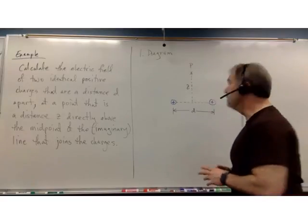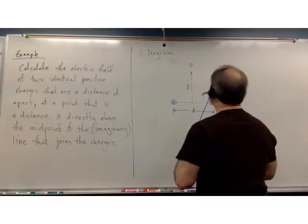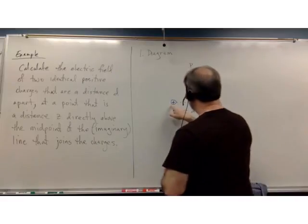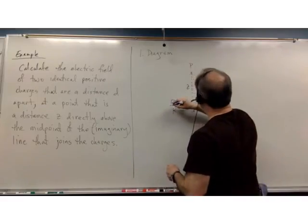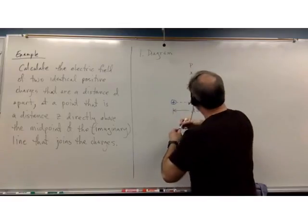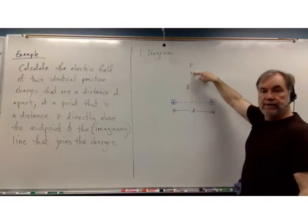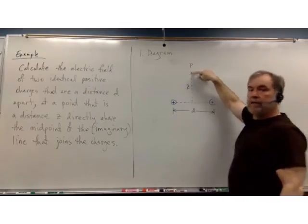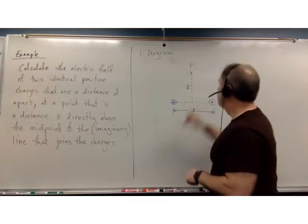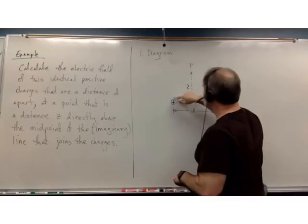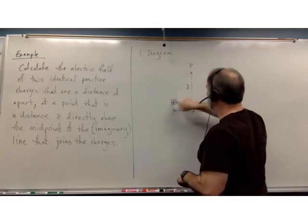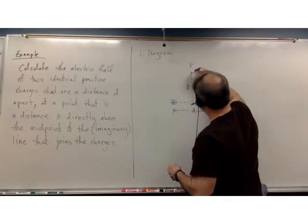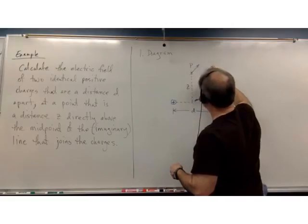We still have to draw the electric field vectors. From the left-hand charge, I'm going to draw its field vector at point P. The electric field line points away from positive charges and toward negative charges — and radially away. So at point P, the field from the left charge is going to point like that.